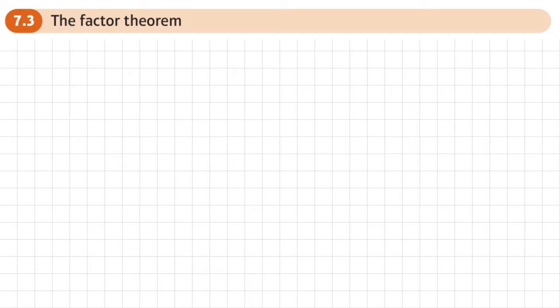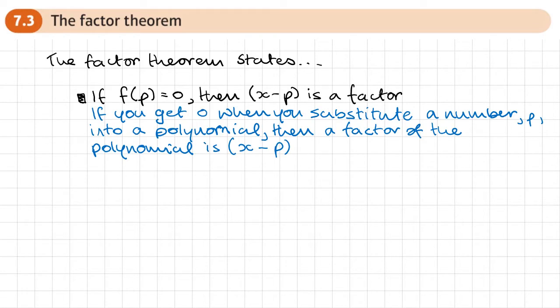This is the third section of chapter 7, algebraic methods, and this is on the factor theorem. The factor theorem states: if f of p equals zero, then x minus p is a factor. This means if you get zero when you substitute a number p into a polynomial, then a factor of that polynomial is x minus p.